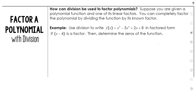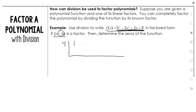Say we're given this long polynomial, and they tell us that x minus 4 is one of your factors. We're going to do synthetic division. Remember, we do the opposite of this, so it would be a 4 out here. Then we do the coefficients: 1, negative 5, 2, and 8. We're going to use synthetic division like we did last unit.